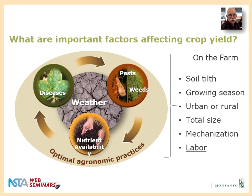What are the factors affecting yield? Val already mentioned diseases, pests, weeds, and nutrient availability, and of course the weather is the big player. Each farm is different — different soil, different growing seasons in different parts of the country. Whether they're rural or next to a city, total farm size, mechanization available, and capital are all important in determining crop yields.